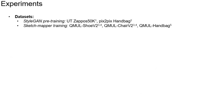To pre-train the StyleGAN generator, we use existing large-scale image-only datasets like UT-Zappos 50K or Pix2Pix handbag. For training our sketch mapper, we use datasets containing sketch-photo pairs: QMUL-Shoe V2, QMUL-Chair V2, and Handbag datasets.